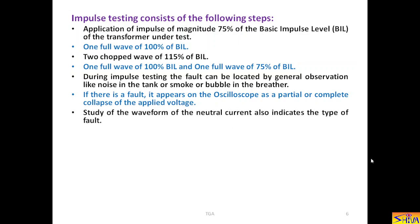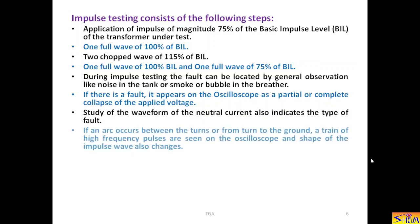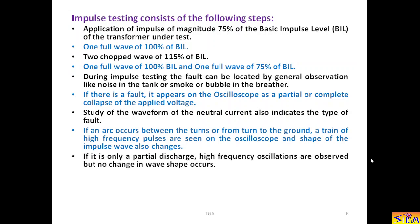Study of the waveform of the neutral current also indicates the type of the fault. If an arc occurs between the turns or from turn to the ground, a train of high-frequency pulses are seen on the oscilloscope, and shape of the impulse wave also changes. So, these all are the indications of the faults and their nature. If it is only a partial discharge, high-frequency oscillations are observed, but no change in wave shape occurs.